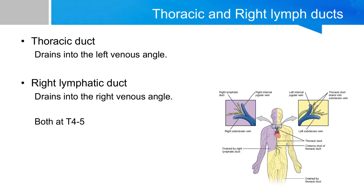Here we can see — though it's not very accurate — this represents the demonstrative region of the drainage of the thoracic and right lymph ducts. Both lymph ducts drain into the venous angle, which is formed from the subclavian and the internal jugular veins. The thoracic duct drains into the left venous angle, while the right lymphatic duct drains into the right venous angle.